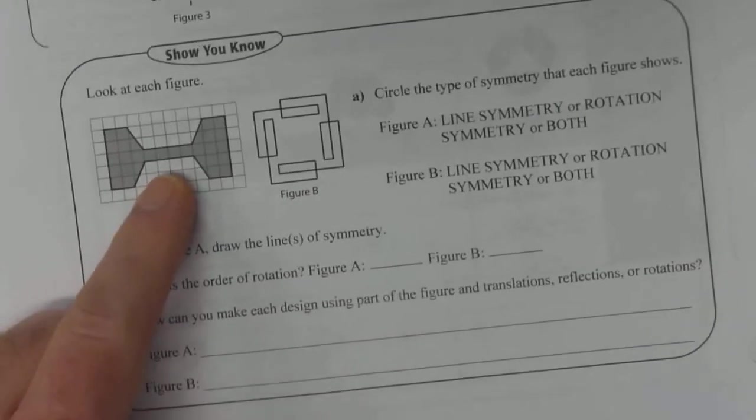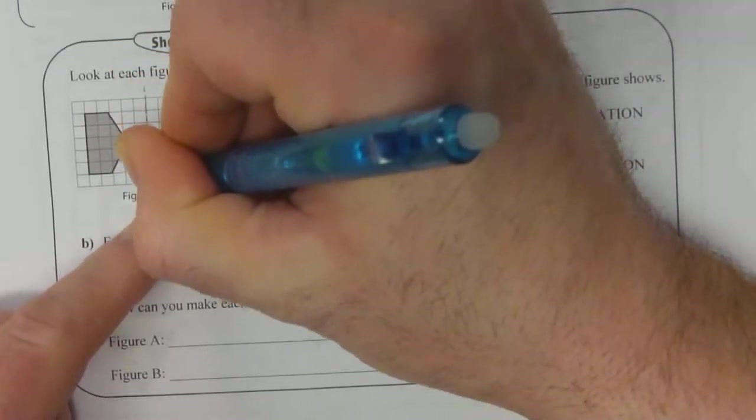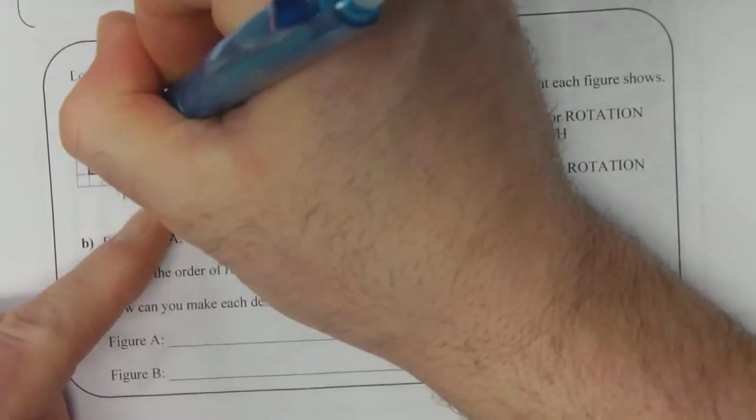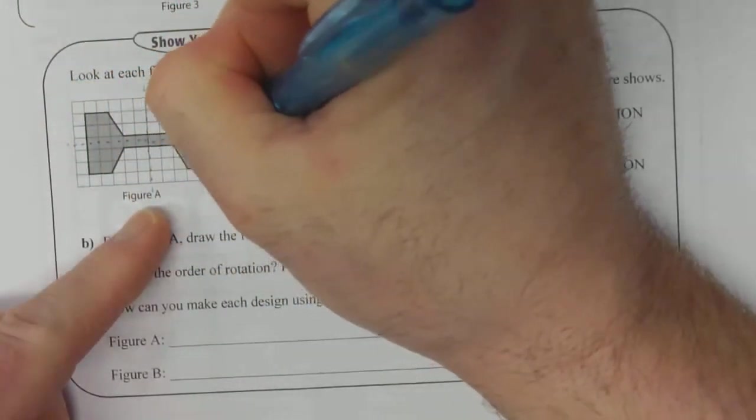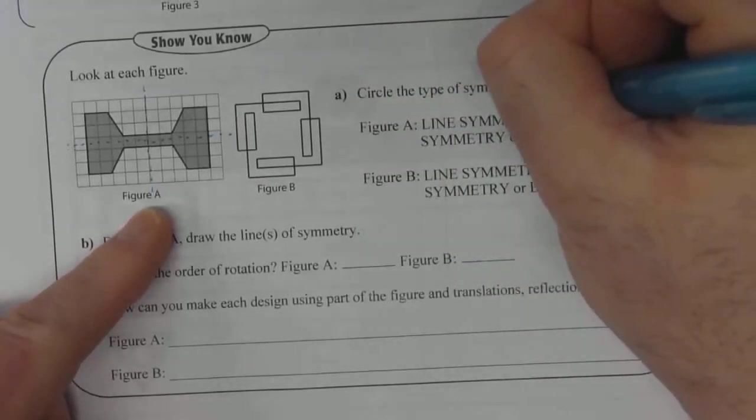We've already worked with a figure like this, and we know that it's got line symmetry vertically and horizontally, but not diagonally. So figure A definitely has line symmetry.